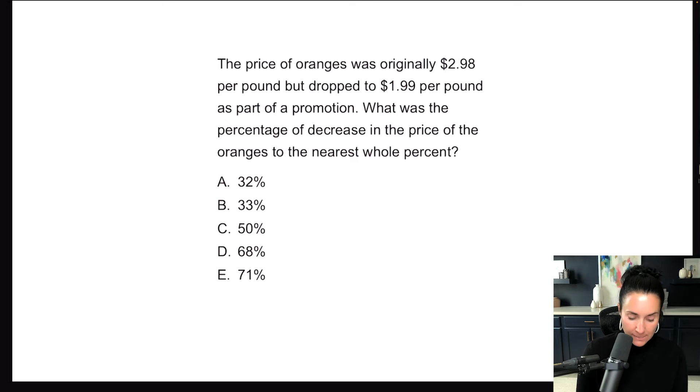And then finally, we have a percent problem. Again, I can see from my answer choices. Let's have a look at the question. The price of oranges was originally $2.98 per pound, but dropped to $1.99 per pound as part of a promotion. What was the percentage of decrease in the price of oranges to the nearest whole percent?